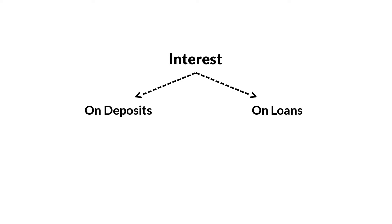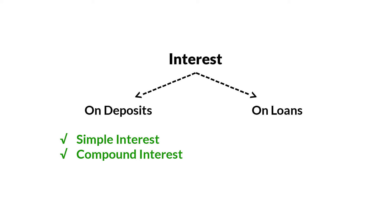When money is deposited in a bank, we earn interest. This interest could be a simple interest or a compound interest depending upon the type and terms of deposit. But when we borrow money, we have to pay interest. This is expressed as a flat rate of interest or a reducing rate of interest.